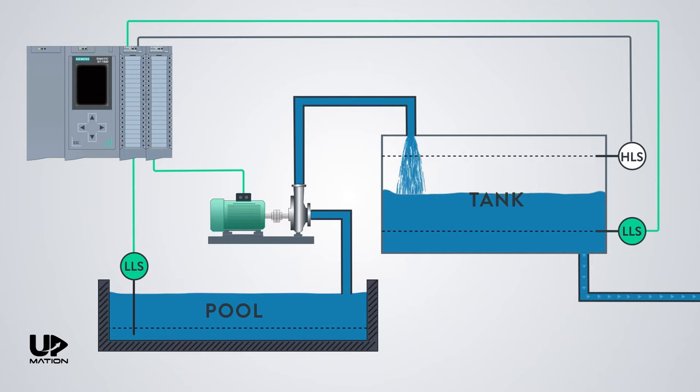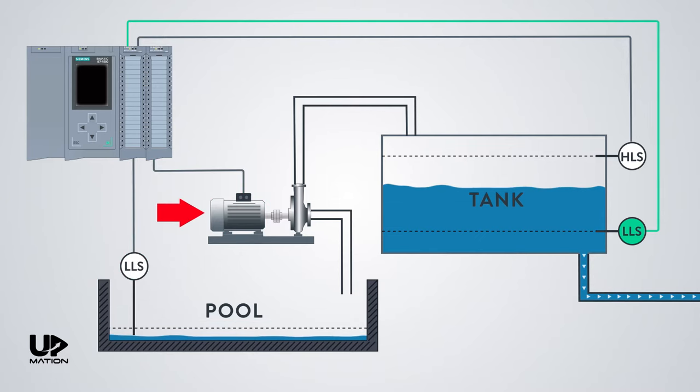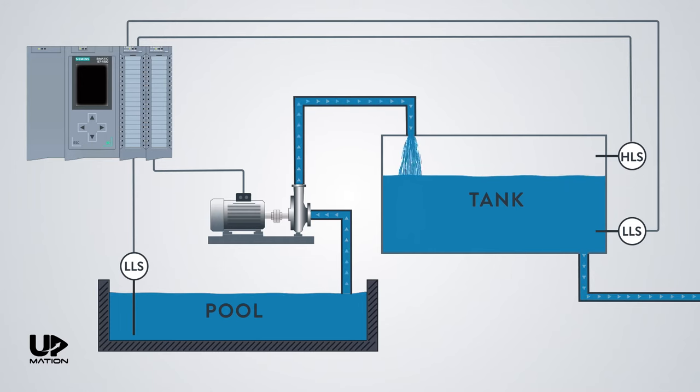There is also one other situation that PLC will shut down the pump. This would be when there is no water in the pool and its low-level switch does not sense any water. So in this example, we have three inputs which come from the level switches and just one single output which turns on and off a three-phase electric motor that drives the pump.